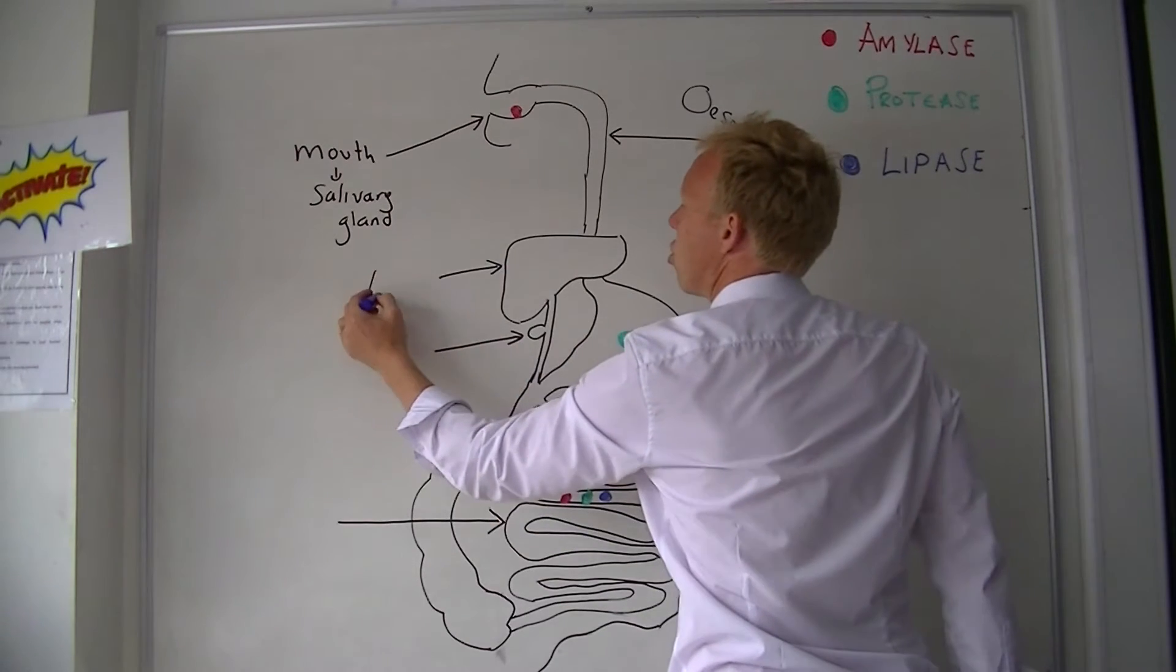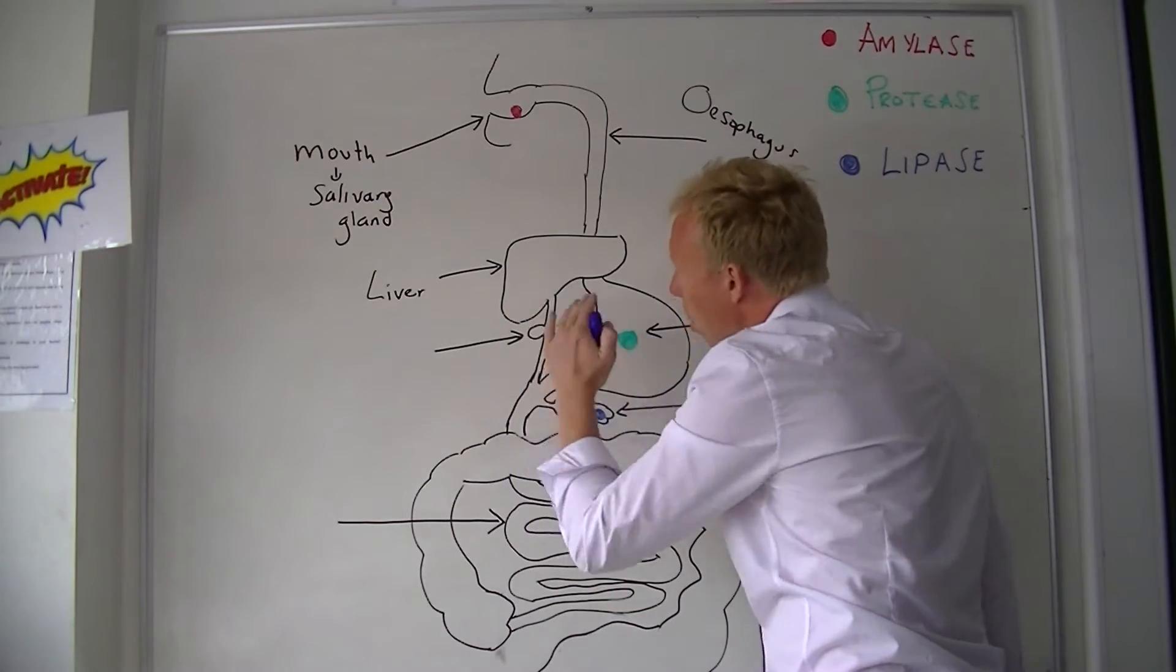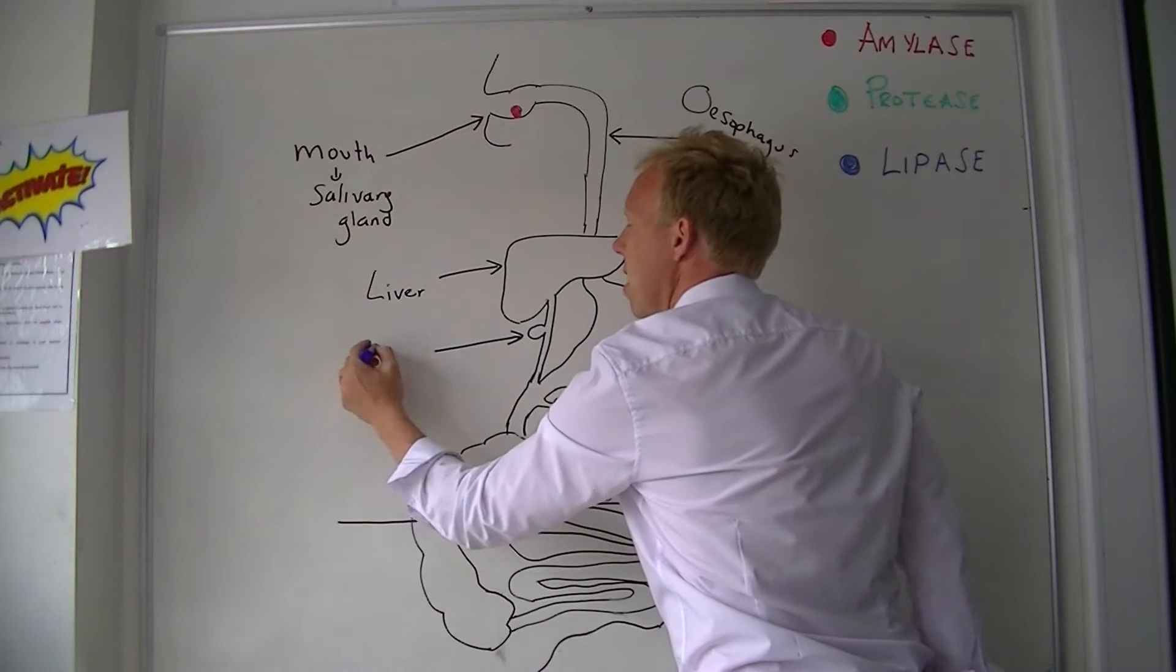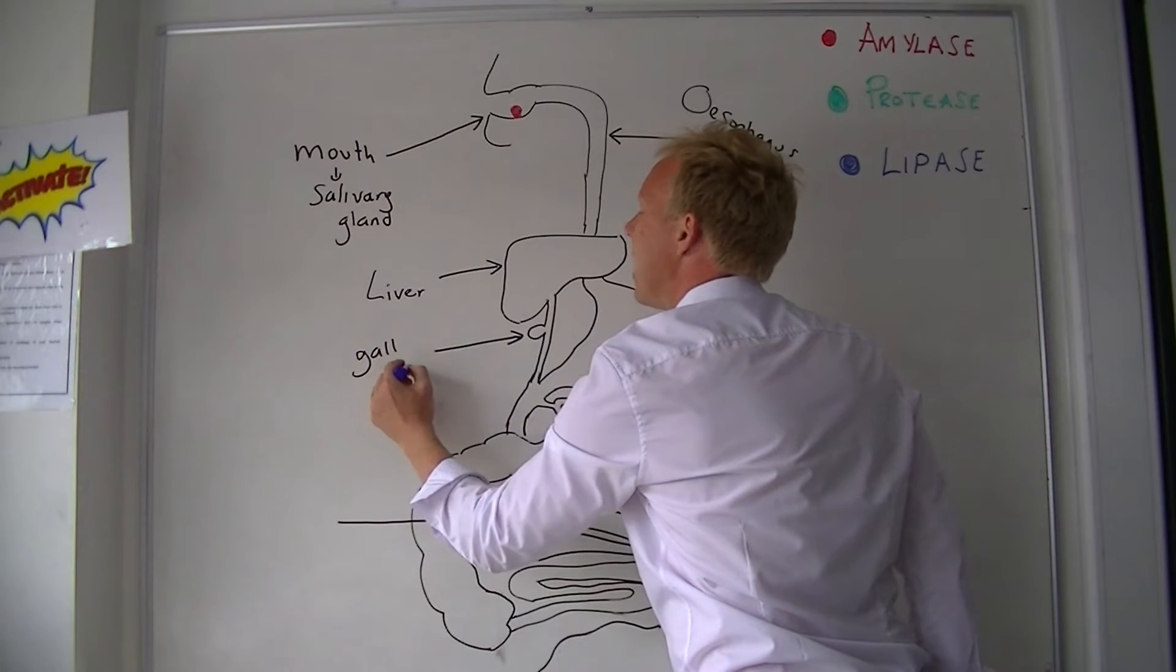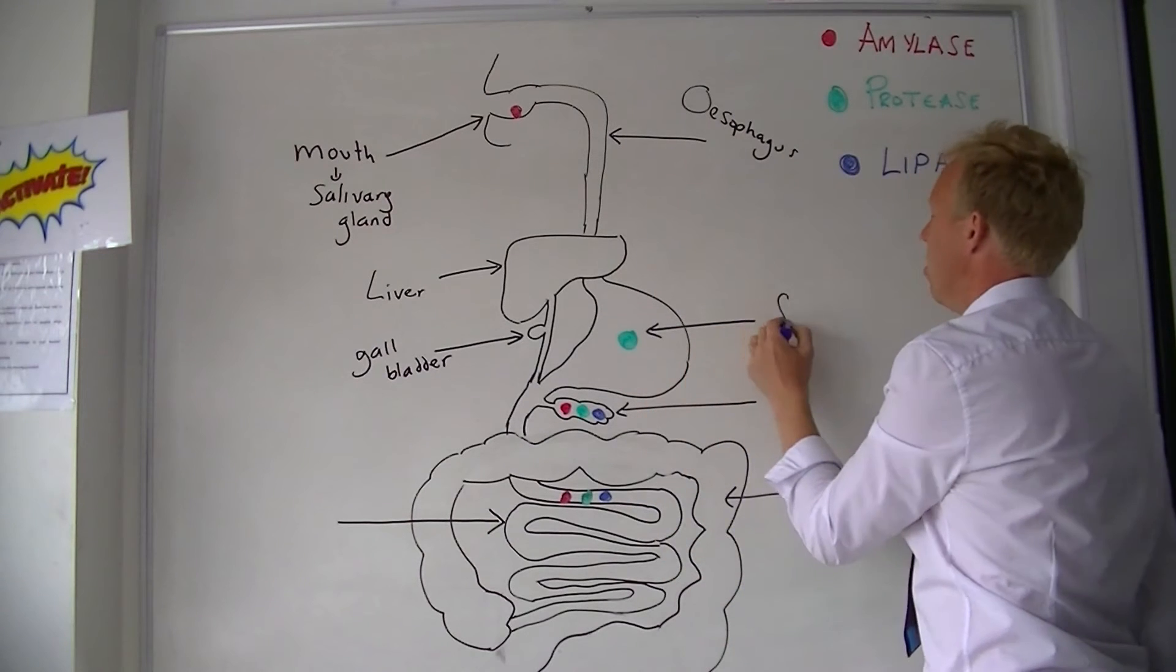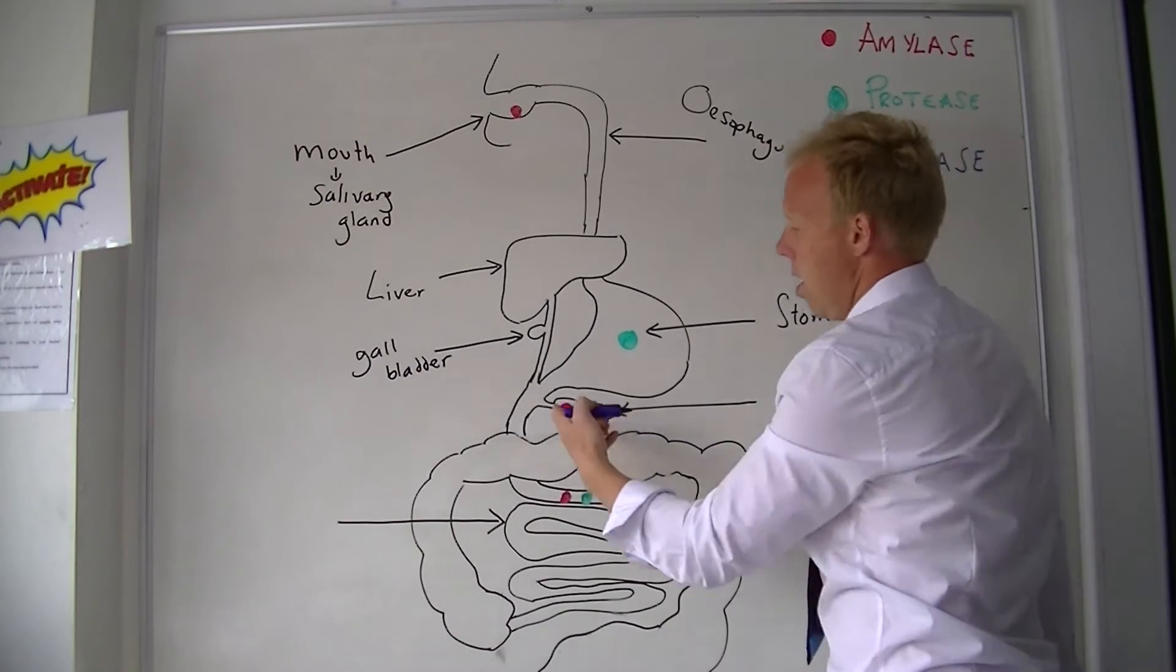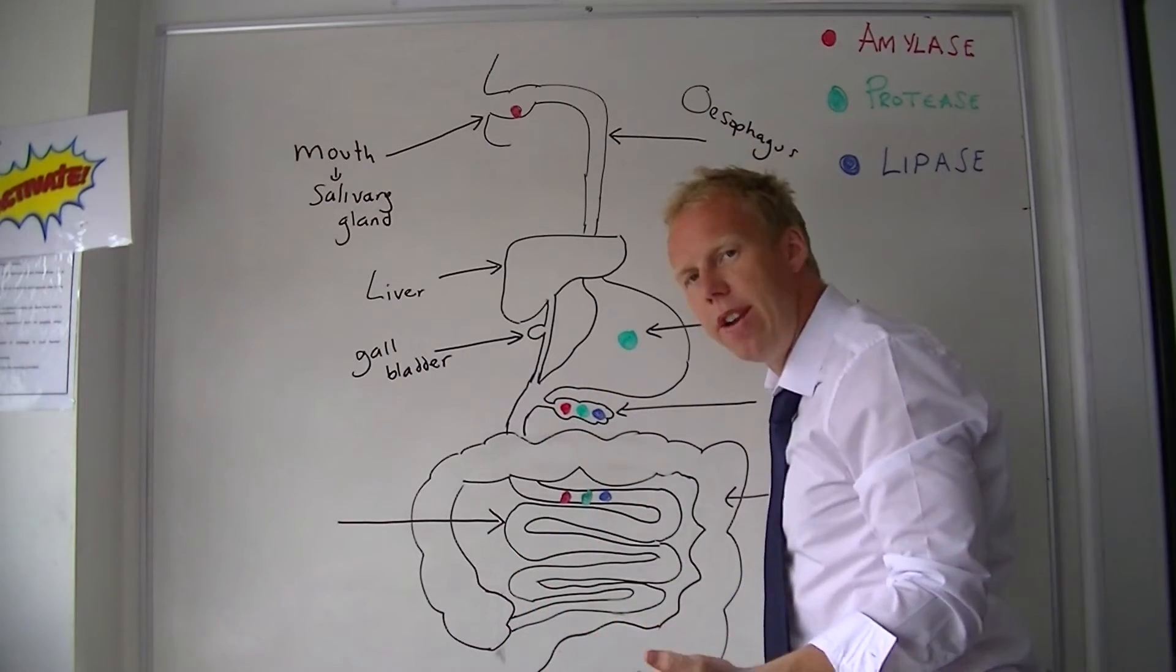This large structure here is the liver, and this little bump that comes off the liver is called the gallbladder. This large object is our stomach. This is a bad drawing of a pancreas.